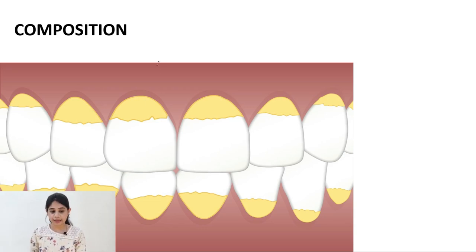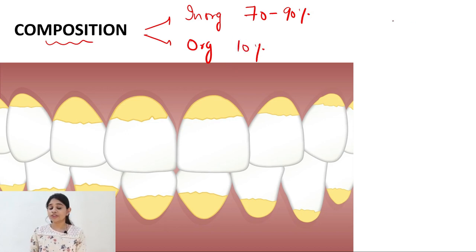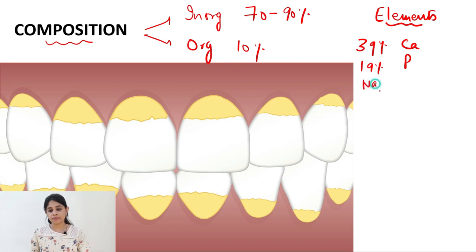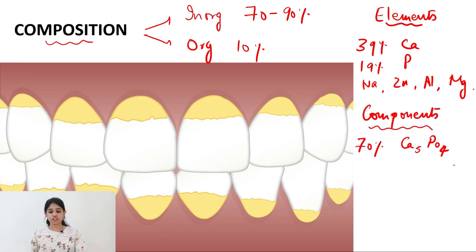So in the last section of this video let's discuss about the composition of the calculus. Like any other component the calculus is also formed by the inorganic contents and the organic contents. So inorganic contents are present in majority. So approximately 70 to 90% are the inorganic contents and only about 10% are the organic contents. Now coming on to the inorganic contents the elements that can be seen in the dental calculus are 39% is calcium 19% is the phosphorus and we can see traces of sodium, zinc, aluminum, magnesium, etc. Now if we talk about the components or the molecules 70% of them are calcium phosphate molecules 3% are the calcium carbonate molecules and we can see traces of magnesium phosphate molecules.